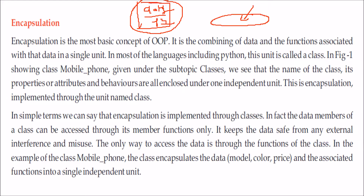We have made it an independent unit. Encapsulation is a word which has come from biology — but how do we implement it in a programming language? We implement encapsulation through classes. The data members of the class can be accessed only through its functions; there is no other way. This data is dealt with only through these functions, so if you want to get hold of this data, you have to ask the function to get it for you.